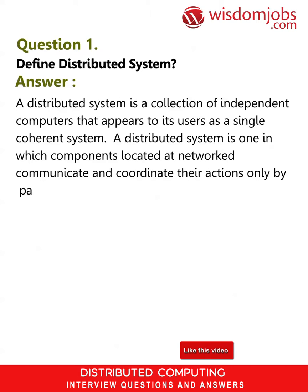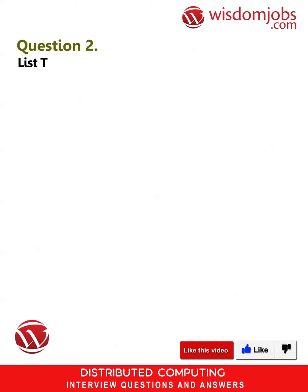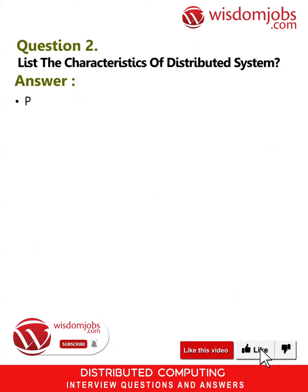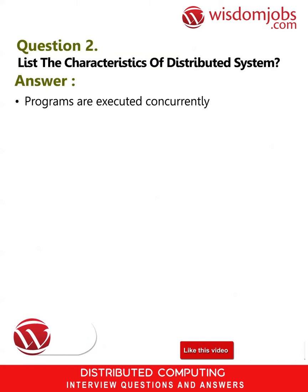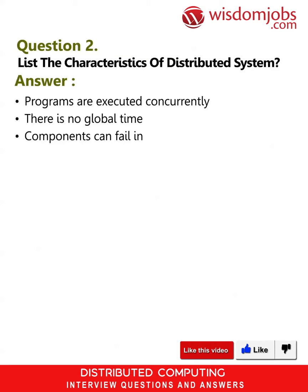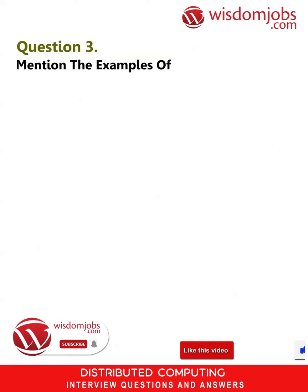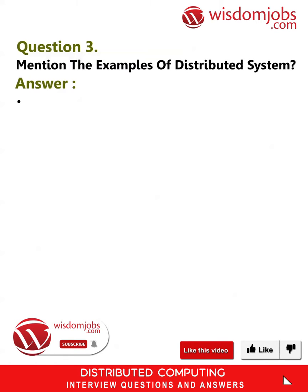Question 2: List the characteristics of distributed system. Answer: Programs are executed concurrently, there is no global time, components can fail independently — isolation crash.